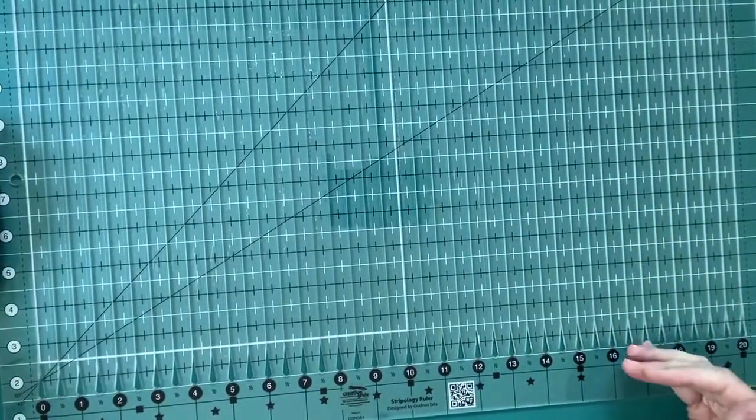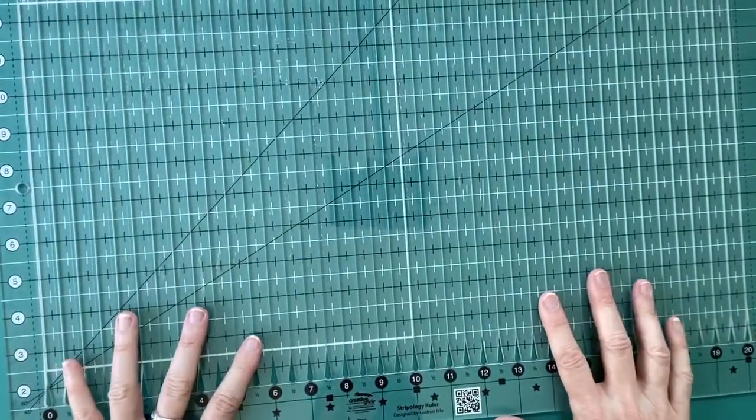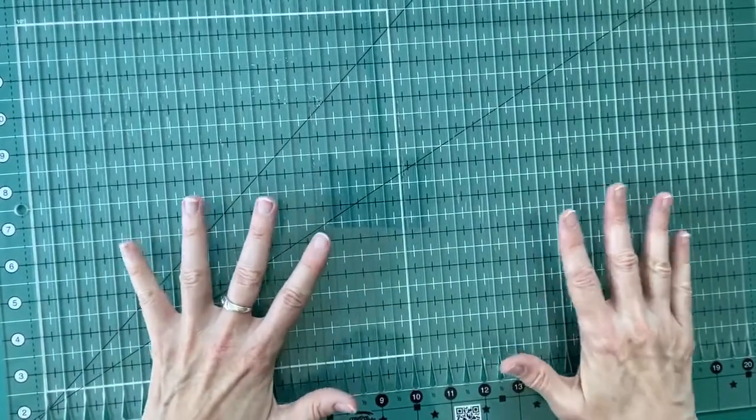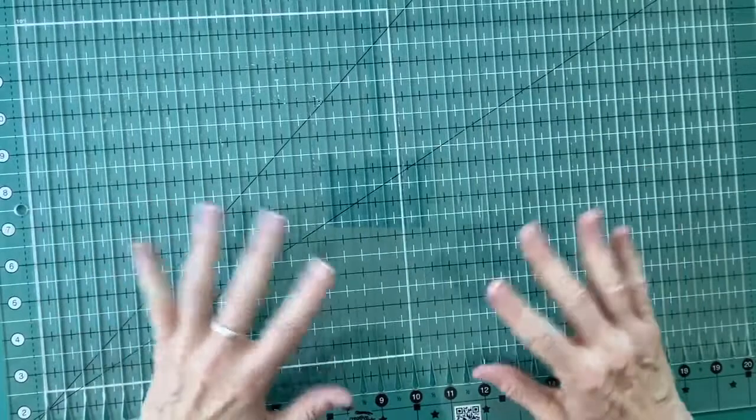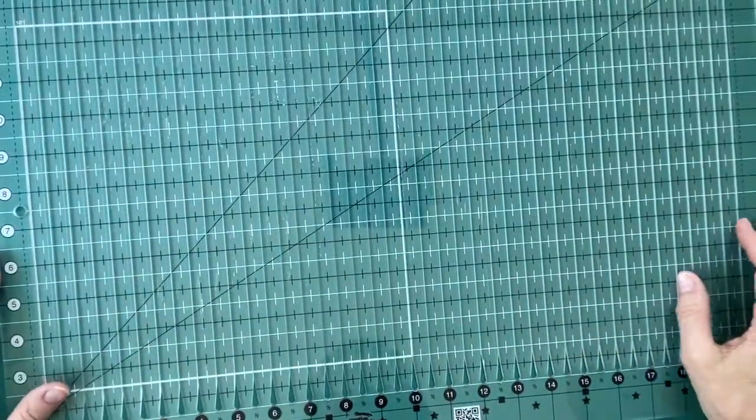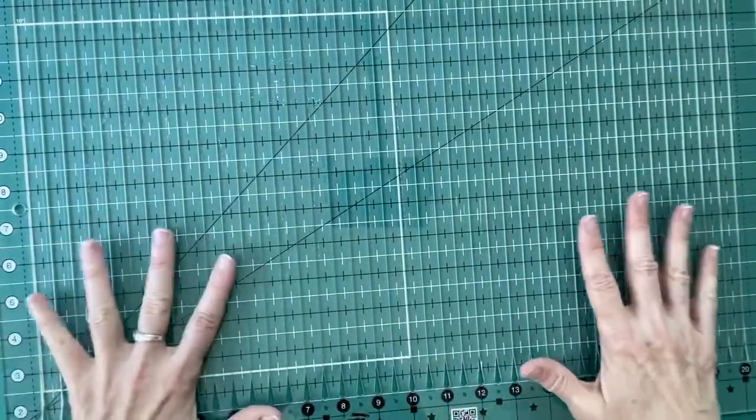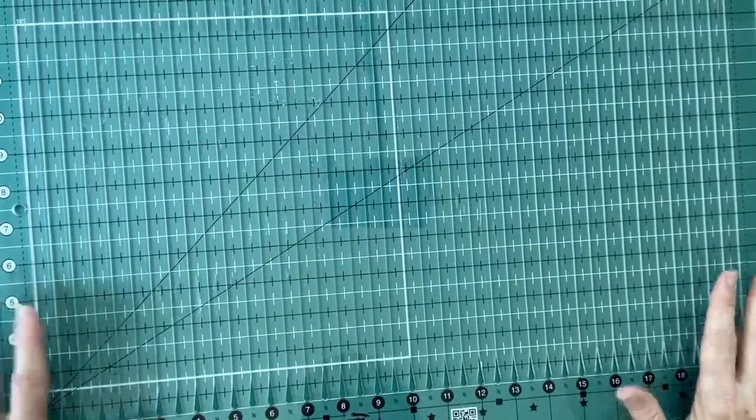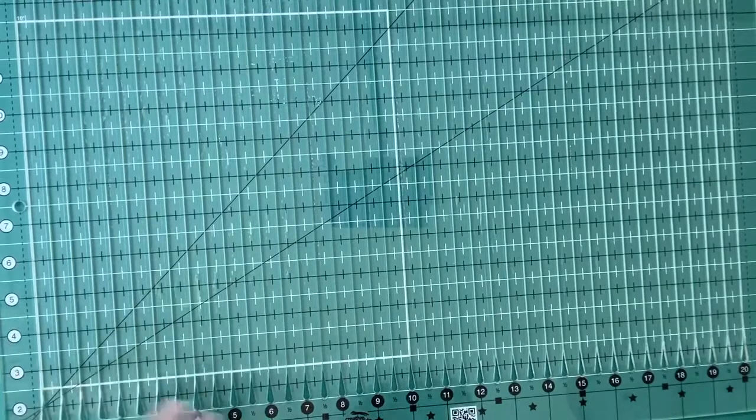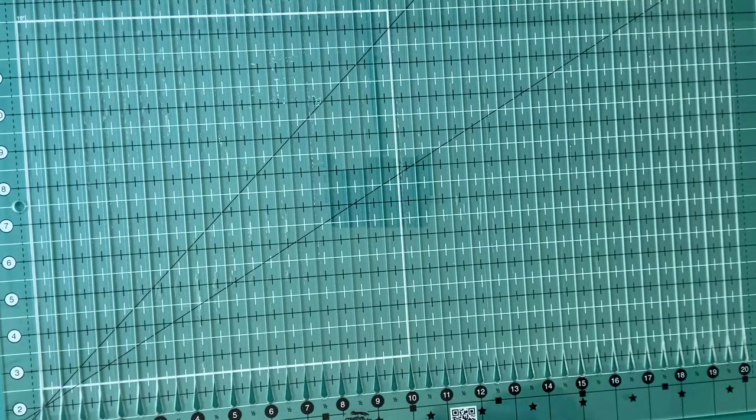The other beauty of this is that it's very accurate. Because you aren't moving the ruler or the fabric at any point, as you would be if you were cutting strips with your regular ruler, then it's accurate, because you aren't shifting any of that, and you're just making cuts that are accurately cut in here. And again, I will probably do a video just specifically on this.